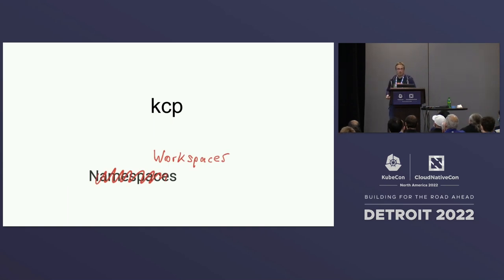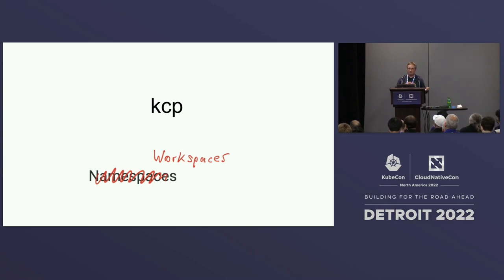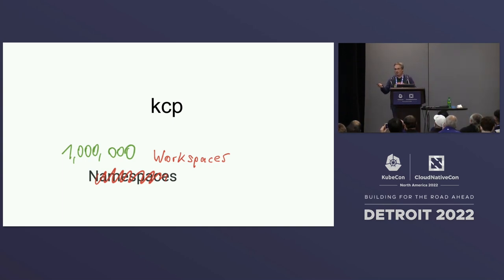The most prominent example everybody knows: CRDs are not namespaced. So if we want namespaced CRDs, we get something like a type space. The experiment is: let's do more isolation than just names. If we do that, we get something we call a workspace. The workspace is a type space in the sense that CRDs are independent, and basically everything else — discovery, OpenAPI — is independent. Even namespaces are independent. If you have two workspaces, you'll have two default namespaces on both sides. The result is basically that a workspace is like a cluster from the user's perspective, but backed by the same Kubernetes API server.